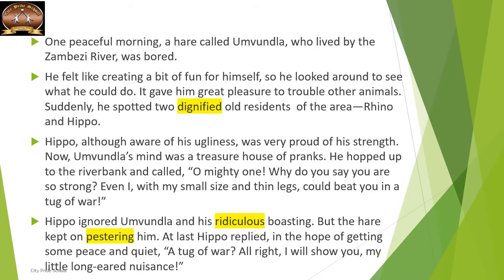One peaceful morning, a hare called Umundla, who lived by the Zambezi River, was bored. He felt like creating a bit of fun for himself, so he looked around to see what he could do. It gave him great pleasure to trouble other animals. Suddenly, he spotted two dignified old residents of the area — Rhino and Hippo. Dignified means those who are very calm and serious, people who have been given a respected status in that place.